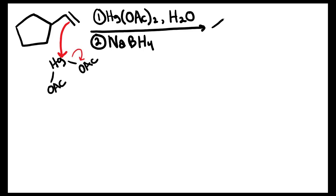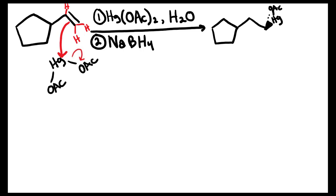We draw the Hg(OAc) intermediate first. The double bond attacks mercury, and because this reaction follows Markovnikov addition, we put the mercury wherever there were more hydrogens. The double bond used to have one hydrogen on top and two hydrogens on the bottom, so because there were more hydrogens on the bottom, we add the mercury to the bottom side — on a wedge here. Mercury has a lone pair and can donate electron density to the adjacent carbon, making it only partially positive rather than a full carbocation, so no carbocation rearrangements occur.